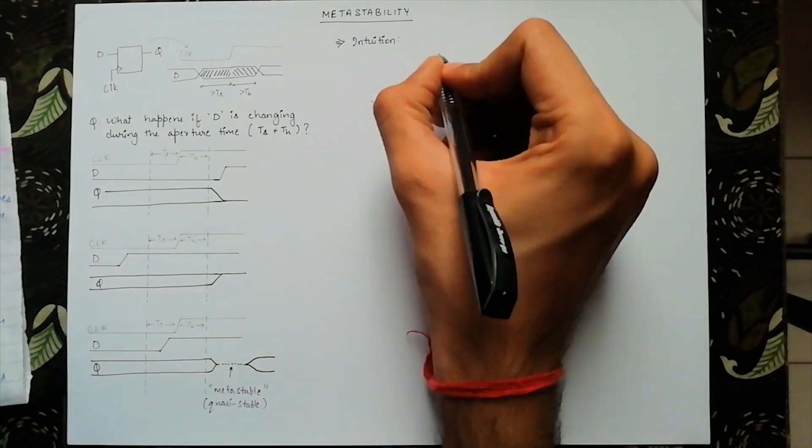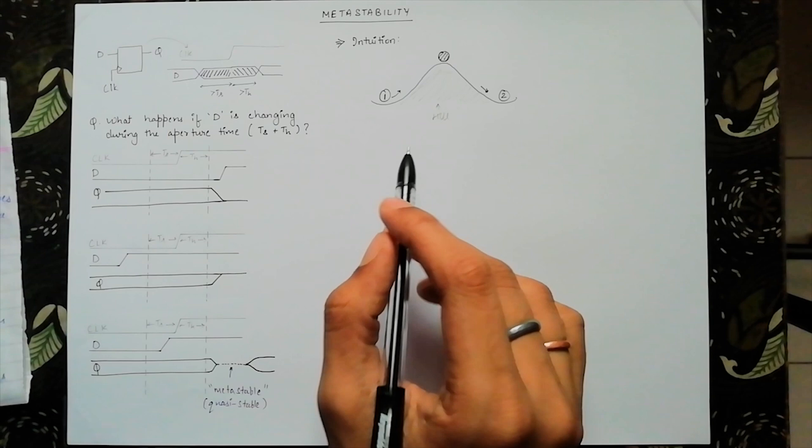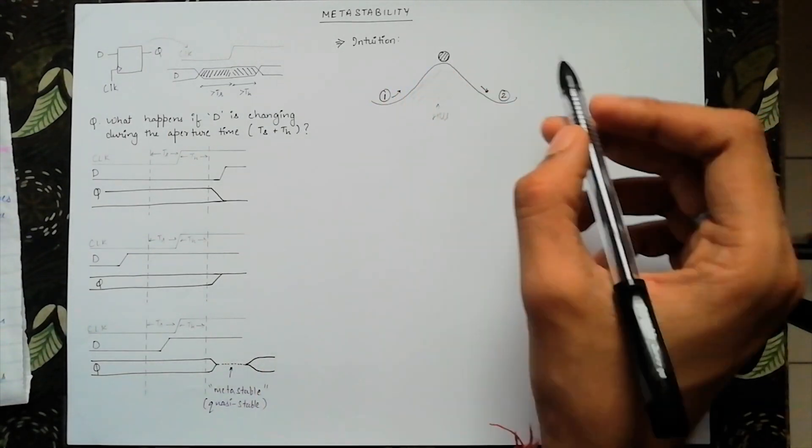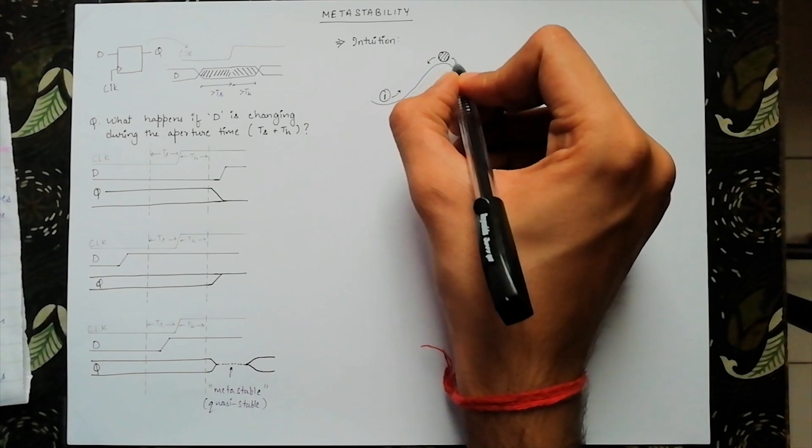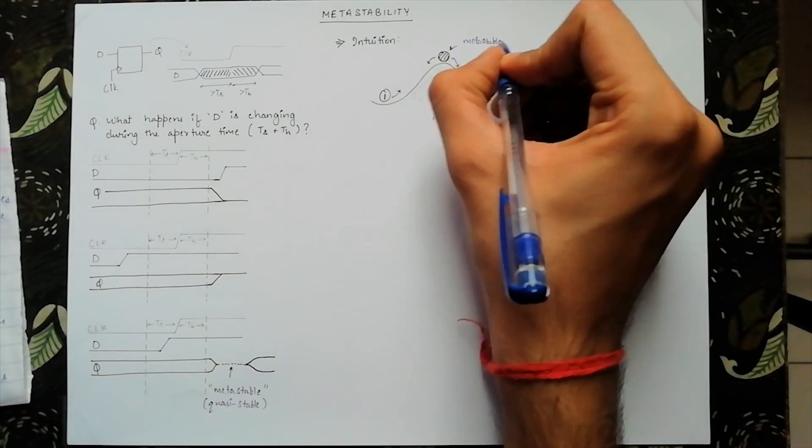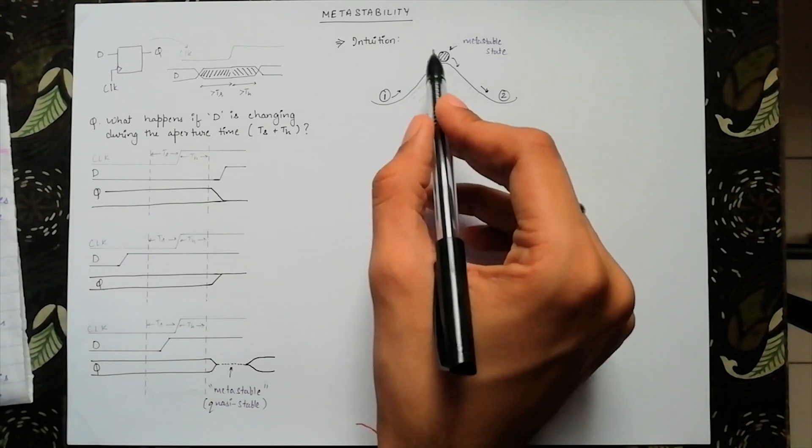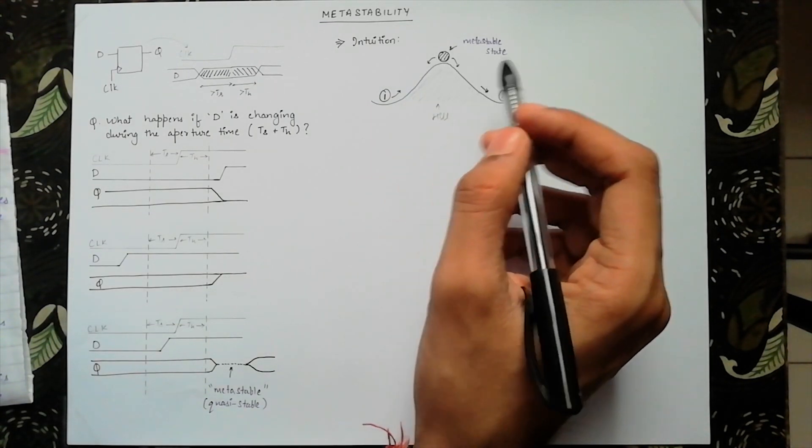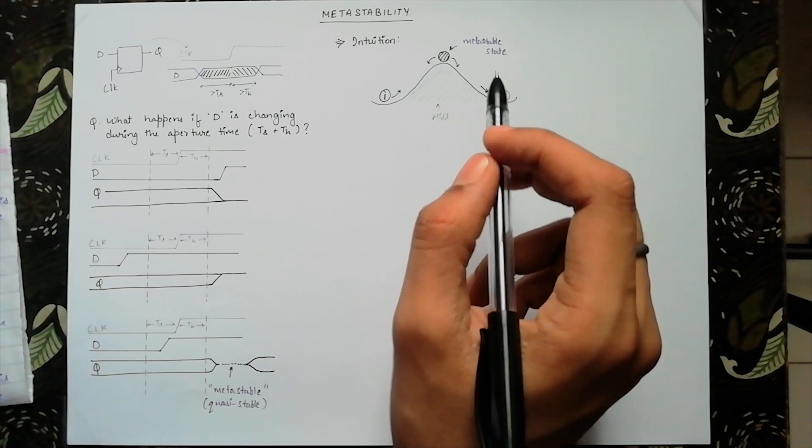But if you hit the ball such that it lands at the top of the hill and stays there, even the slightest disturbances like the wind will make the ball fall to either 1 or 2. The hill top is the metastable state because even if the ball can reach this state, it can't stay there infinitely in the real world because of the disturbances or the noises present.